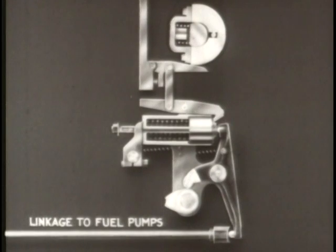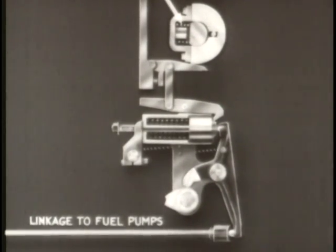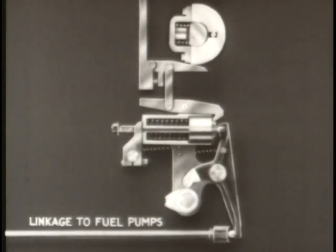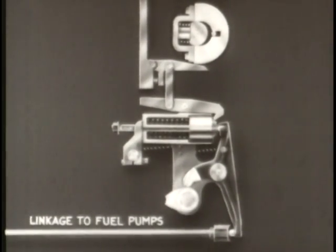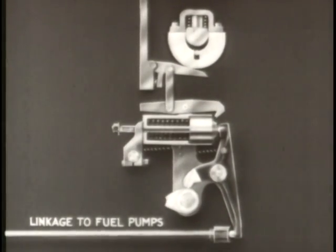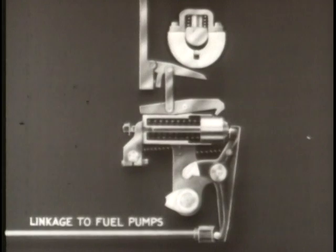Let us repeat the action of this mechanism step by step. The flyweight is held to the drive shaft by a spring. When the engine overspeeds, centrifugal force overcomes the resistance of this spring and the flyweight moves away from the shaft. In this position, the rotating flyweight trips the latch, which releases the spring-loaded plunger. The plunger pushes against the fuel cutout lever, which in turn moves the fuel pump control to the no-injection position, and the engine stops.